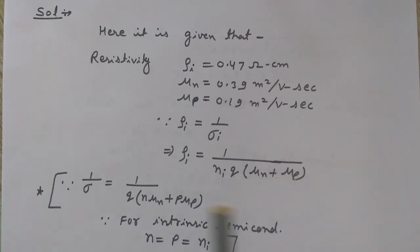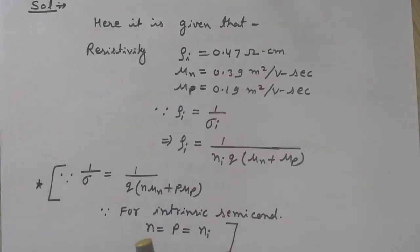Why is it so? Because the conductivity is given by q n mu_n plus p mu_p, here mu_n and mu_p are the concentration of electrons and p is the concentration of holes, and this q is the charge of the electron, 1.6 into 10 to the power minus 19 coulomb. And since in any intrinsic semiconductor n equals p, that is the concentration of electrons equals concentration of holes which equals n_i.